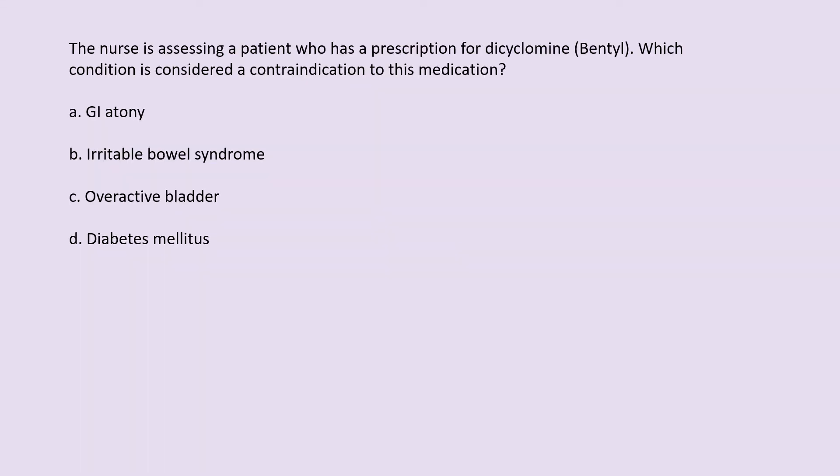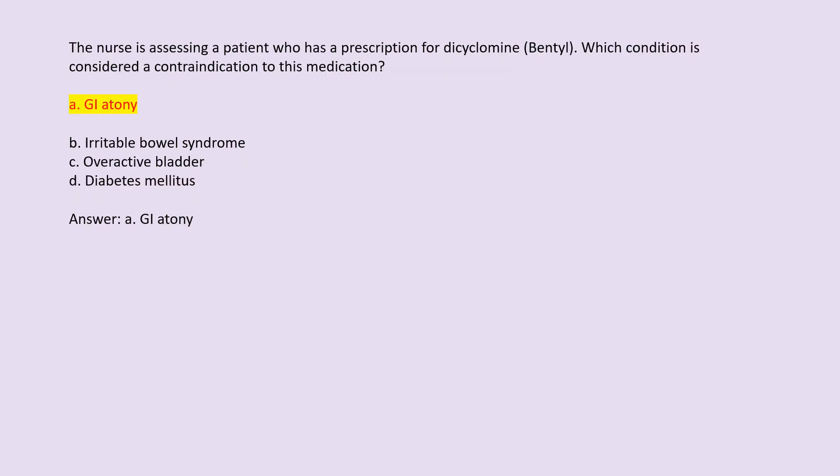The nurse is assessing a patient who has a prescription for dicyclomine (Bentyl). Which condition is considered a contraindication to this medication? A. GI atony. B. Irritable bowel syndrome. C. Overactive bladder. D. Diabetes mellitus. Answer: A. GI atony.